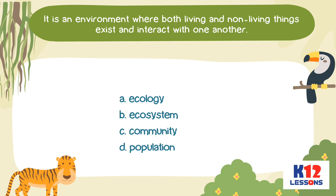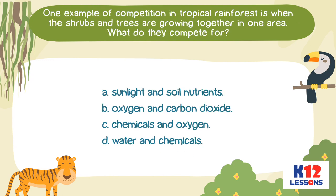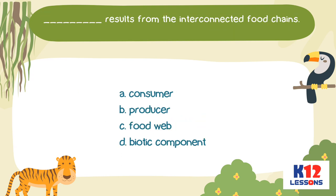It is an environment where both living and non-living things exist and interact with one another. A. ecology; B. ecosystem; C. community; D. population. One example of competition in tropical rainforest is when the shrubs and trees are growing together in one area — what do they compete for? A. sunlight and soil nutrients; B. oxygen and carbon dioxide; C. chemicals; D. water and chemicals. Blank results from the interconnected food chains: A. consumer; B. producer; C. food web; D. biotic component.